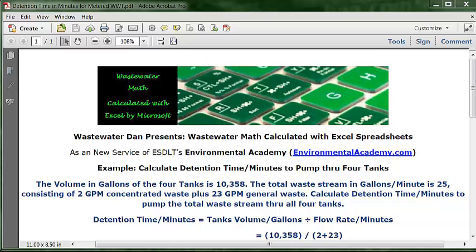In this case, all four tanks have a total volume of 10,358 gallons. This waste stream is actually a stream from two waste sources.